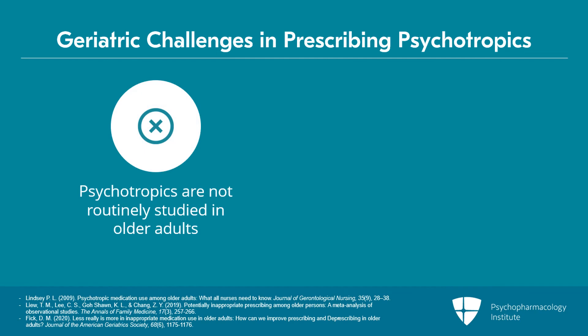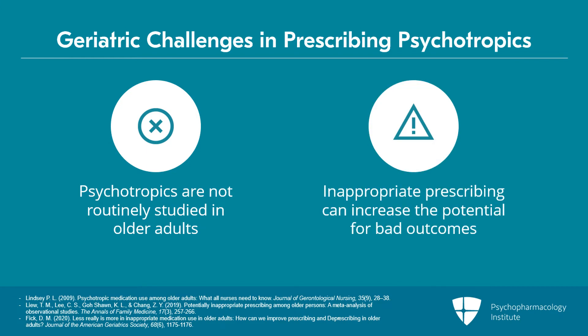Psychotropic medications are also not routinely studied in older adults, and a lot of our randomized controlled trials that study the efficacy of these medications exclude our oldest old population. Inappropriate prescribing can really increase potential bad outcomes for older adults, and the prevalence of potentially inappropriate medication use ranges anywhere from 20 to 60 percent depending on the healthcare setting and study.